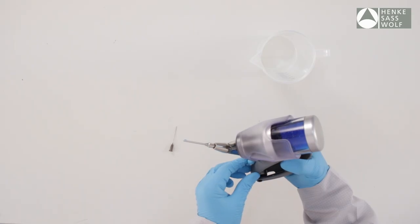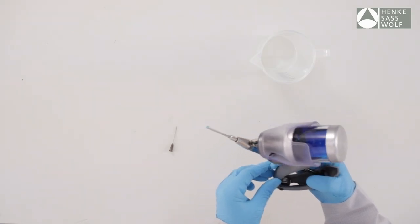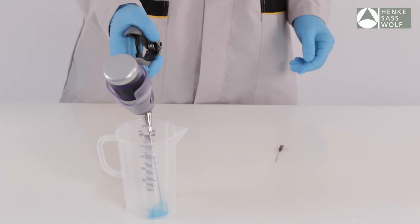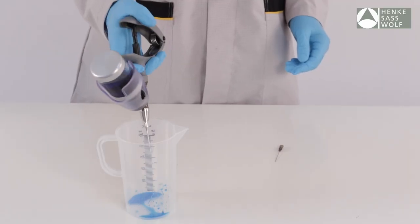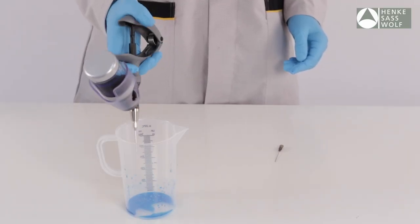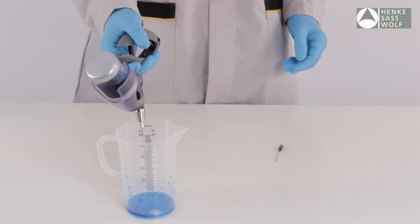Squeeze handle and then release quickly to draw fluid into the barrel. For adjustable syringes, it is recommended to prime the syringe on the maximum dose and dial down, especially for low doses.